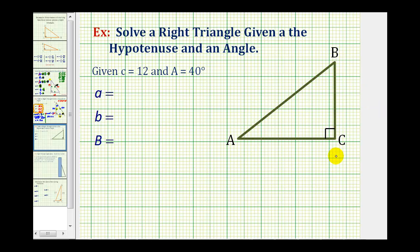We want to solve the right triangle given the length of side C is 12 and the measure of angle A is 40 degrees.